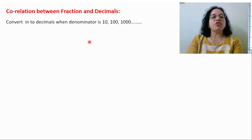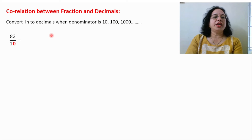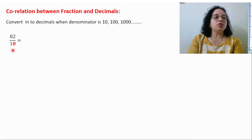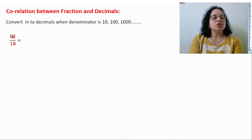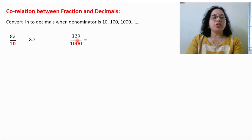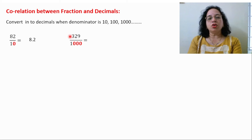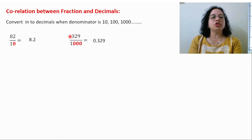What is the correlation between fraction and decimal? We convert a fraction to a decimal when the denominator is 10, 100, or 1000. For 82 upon 10 — this is a fraction. In the denominator there is one zero, so leave one place from the right-hand side and put the decimal. Your answer will be 8.2. Take one more example: 329 upon 1000. There are three zeros, so leave three digits and put the decimal. With no whole part, write 0. So the answer is 0.329.